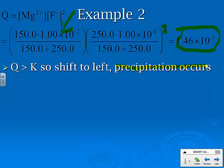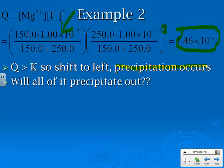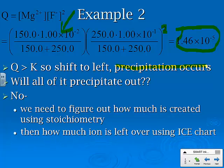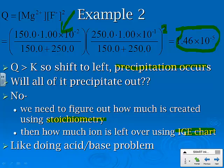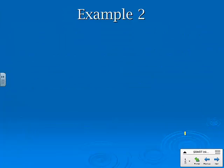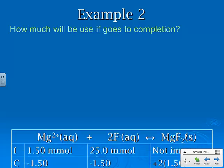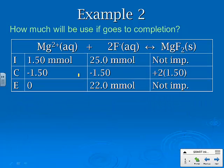So that's the first step, and so we are going to have precipitation. Now the question becomes, will all of it precipitate out, and the answer is no. So we have to figure out how much is created using stoichiometry, then how much ion is left over using the ice chart. We're going to go back to actually doing a stoichiometry chart first, and then an ice chart second, very similar to doing the acid-base problems that we were doing where we had a chemical reaction first, and then what's left over.